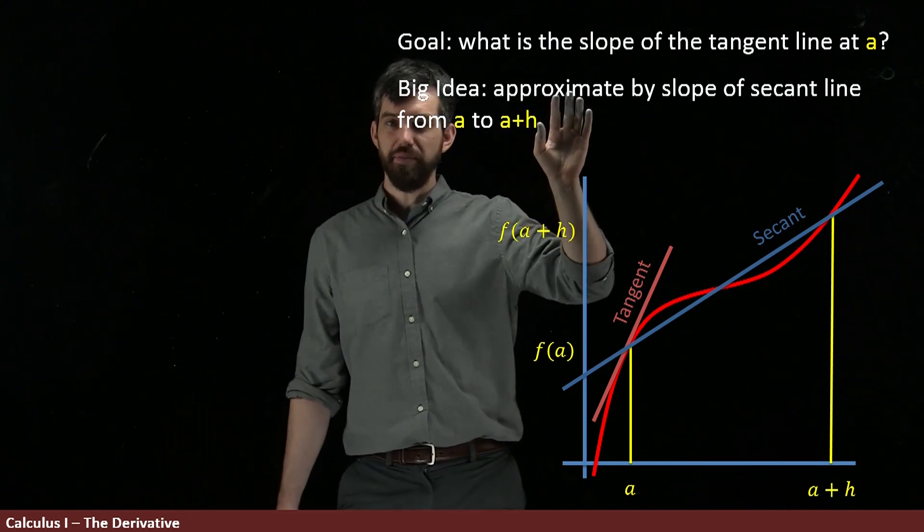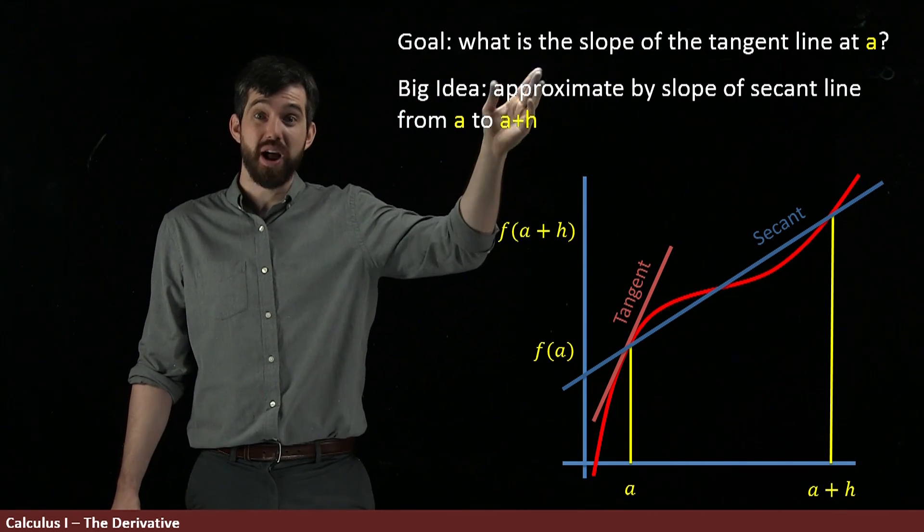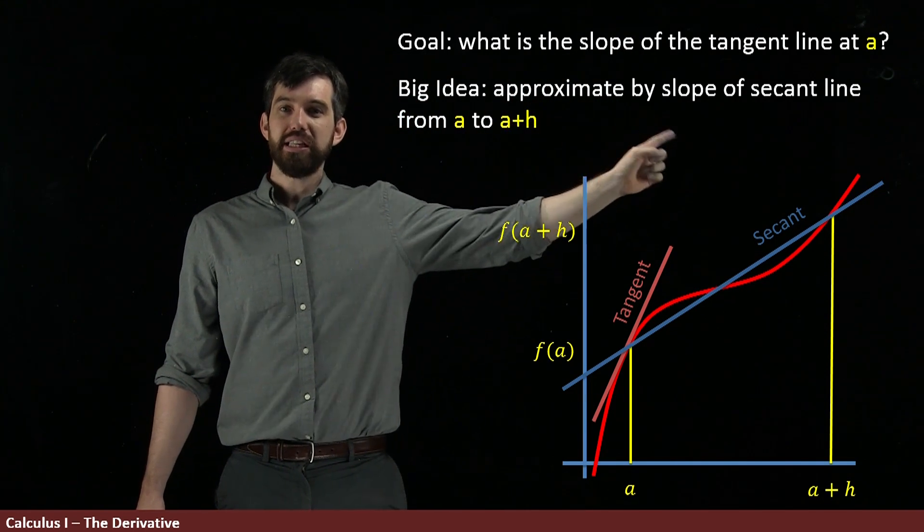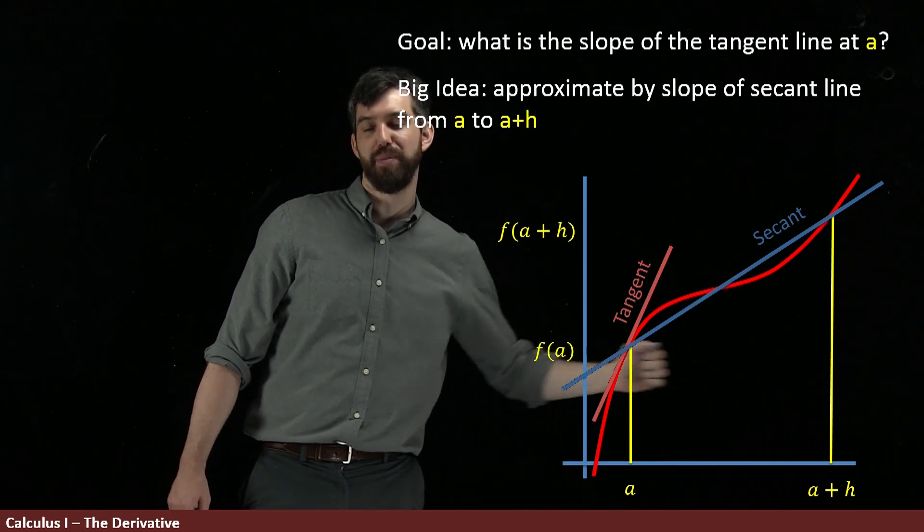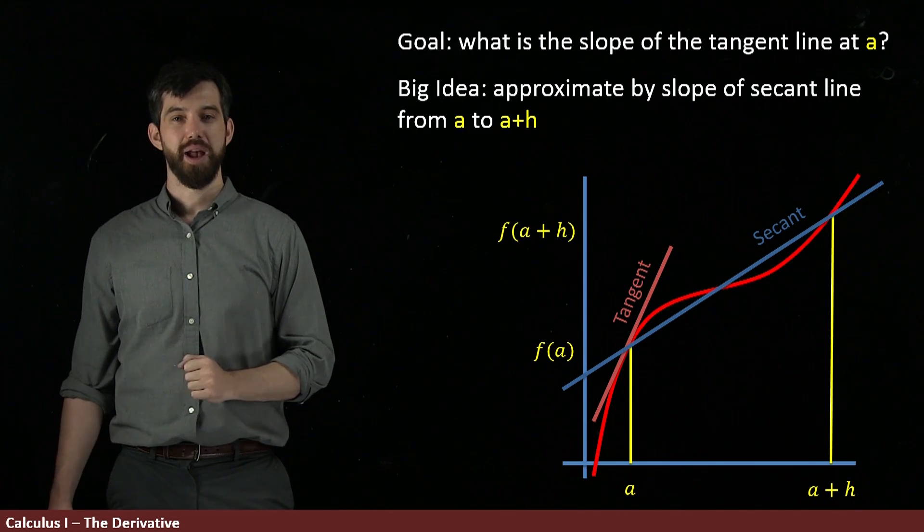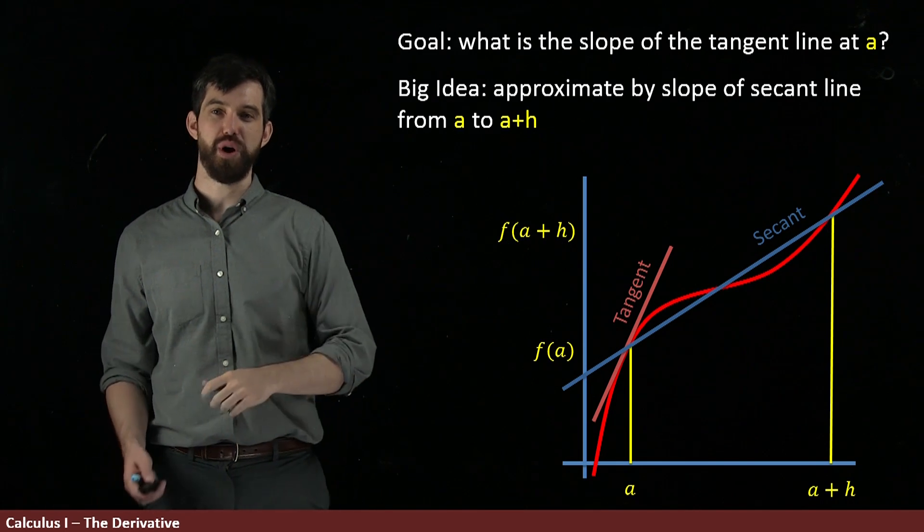So that's what our big idea is. We are going to approximate the tangent line, the one I want to figure out, by the slope of that secant line that goes from this point where my x is a up to my x is a plus h. And whatever that slope is, that's going to be our approximation.